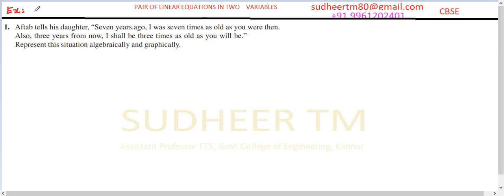Exercise 3.1, question number one. Aftab tells his daughter: seven years ago I was seven times as old as you were then. Also, three years from now I shall be three times as old as you will be. Represent these situations graphically and algebraically. Let's have the easy solution here.